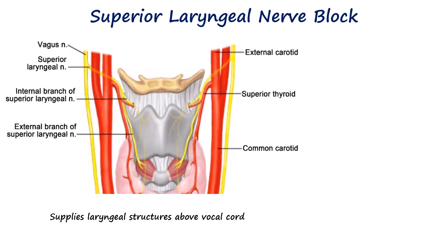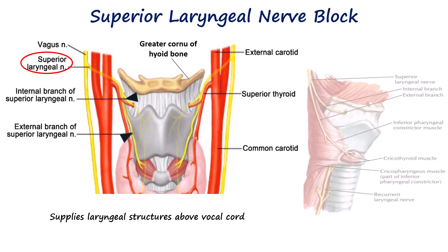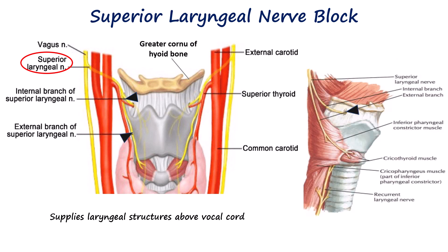Moving on, the superior laryngeal nerve, a branch of the vagus nerve, provides sensation to the laryngeal structures above the vocal cords and lies inferior to the greater cornu of the hyoid bone, where it splits into internal and external branches. The internal branch then penetrates the thyrohyoid membrane, continuing submucously in the piriform fossa. The external branch does not penetrate the thyrohyoid membrane; it descends on the larynx deep to the sternothyroid muscle.